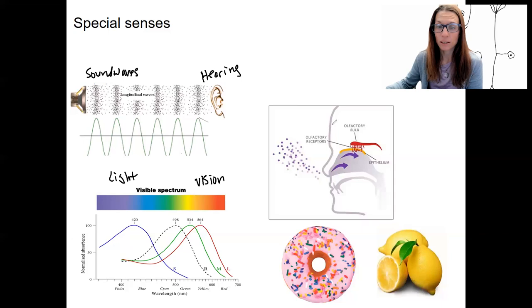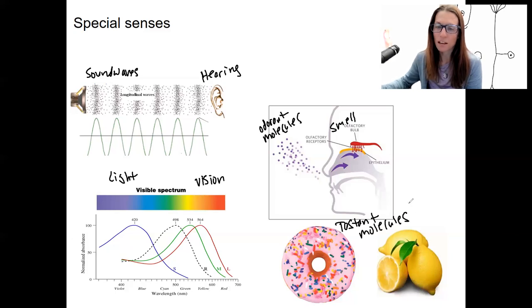Smell is what's happening here. So there are odorants, I'm going to actually call them odorant molecules here, because they are molecules, they're chemicals, it's going to be important. And then lastly, we've got tastants, or tastant molecules, because they're also molecules, this is going to allow us to taste.